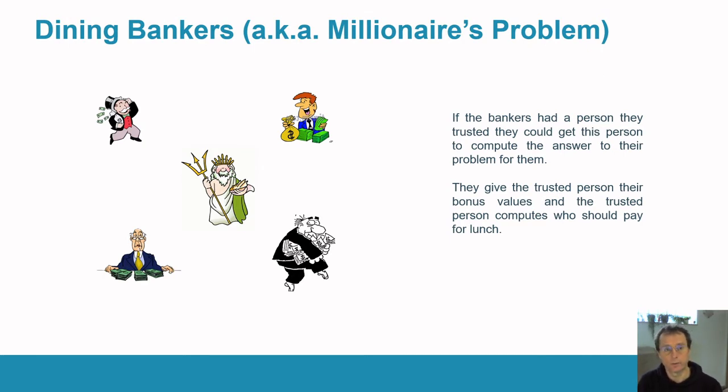For solving the millionaire's problem, we can use a god-like figure. So if we had this trusted person, everybody could tell how much their bonus was to this trusted person, and this trusted god-like figure could tell everybody who had got the biggest bonus.